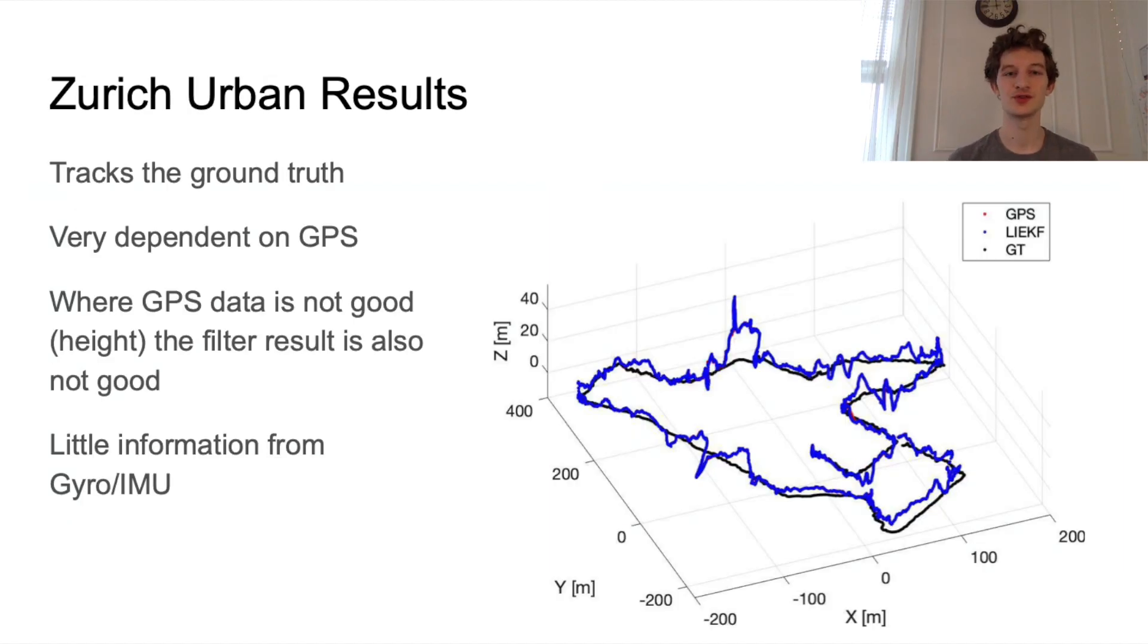How well do these filters work on real data? We applied the filters to the Zurich Urban dataset, which contains GPS, IMU, and gyro data for a drone traversing part of Zurich.